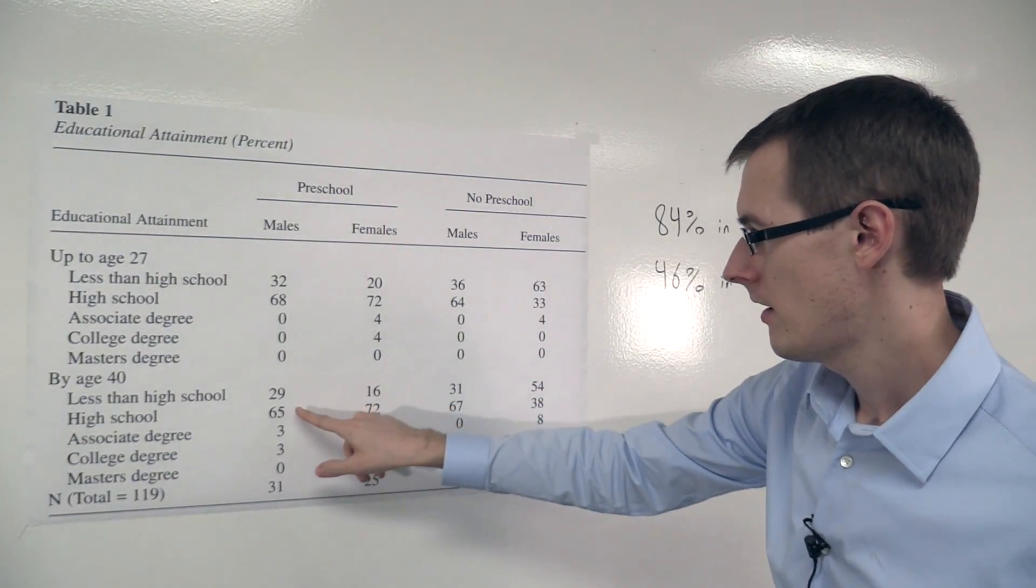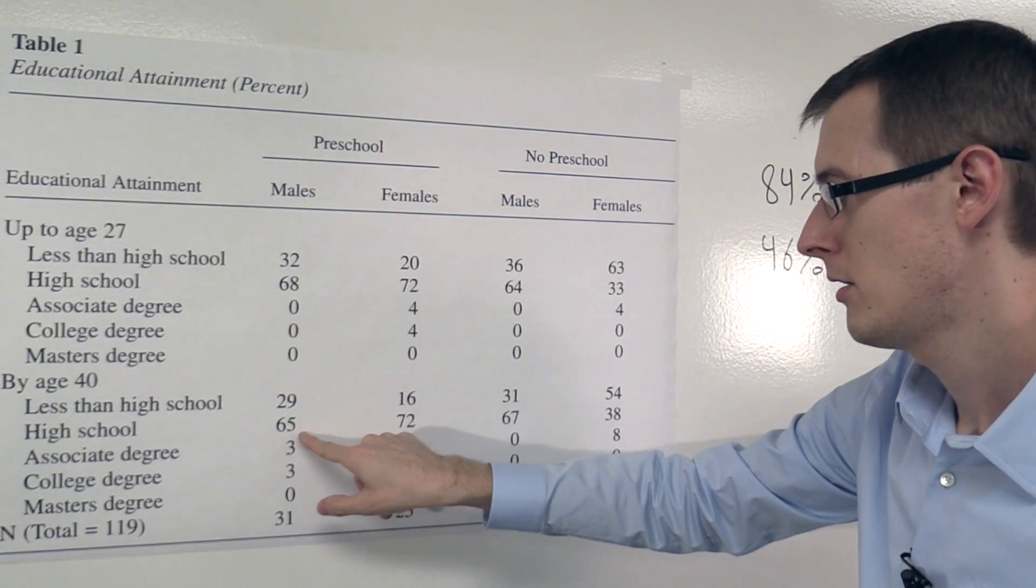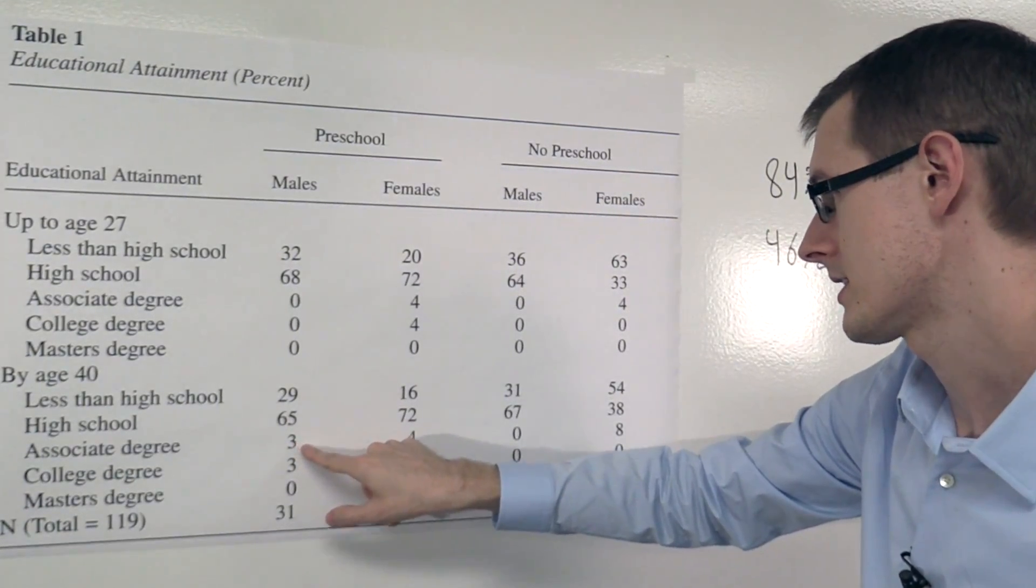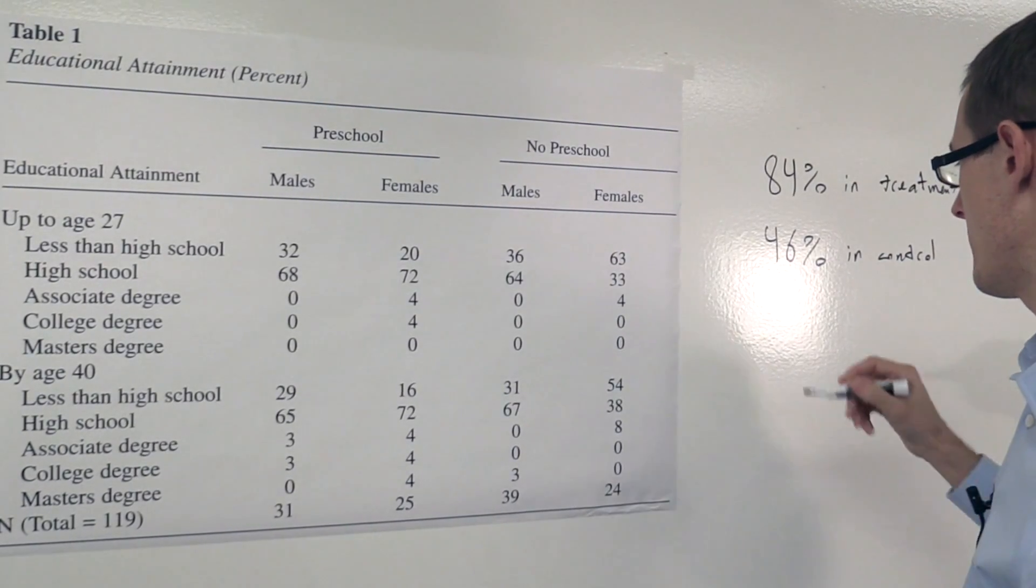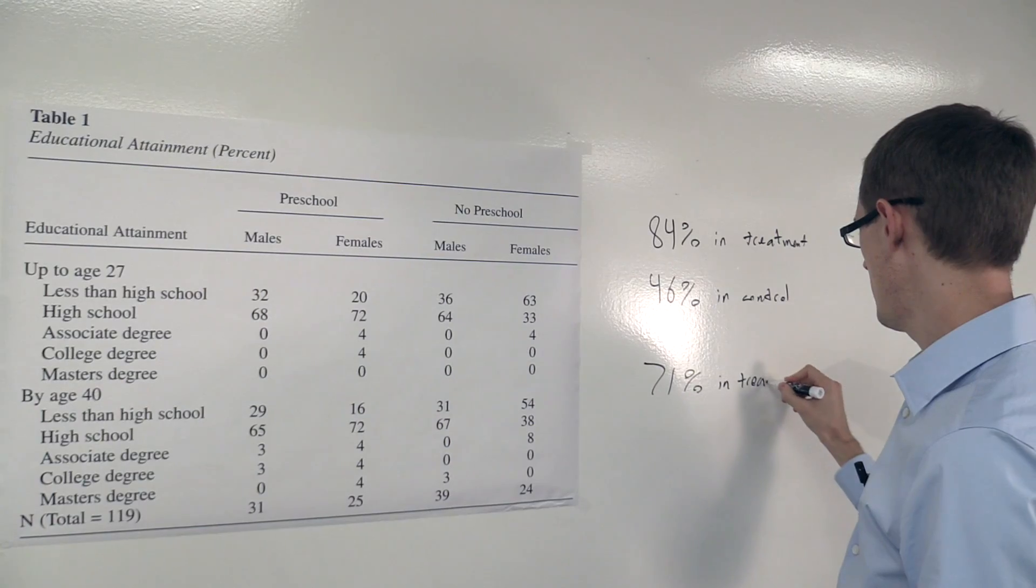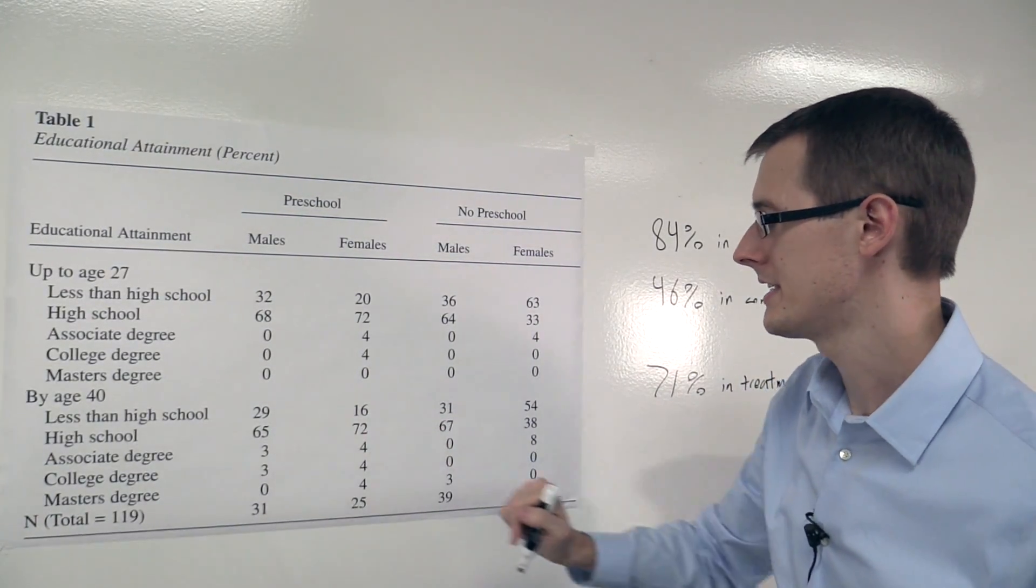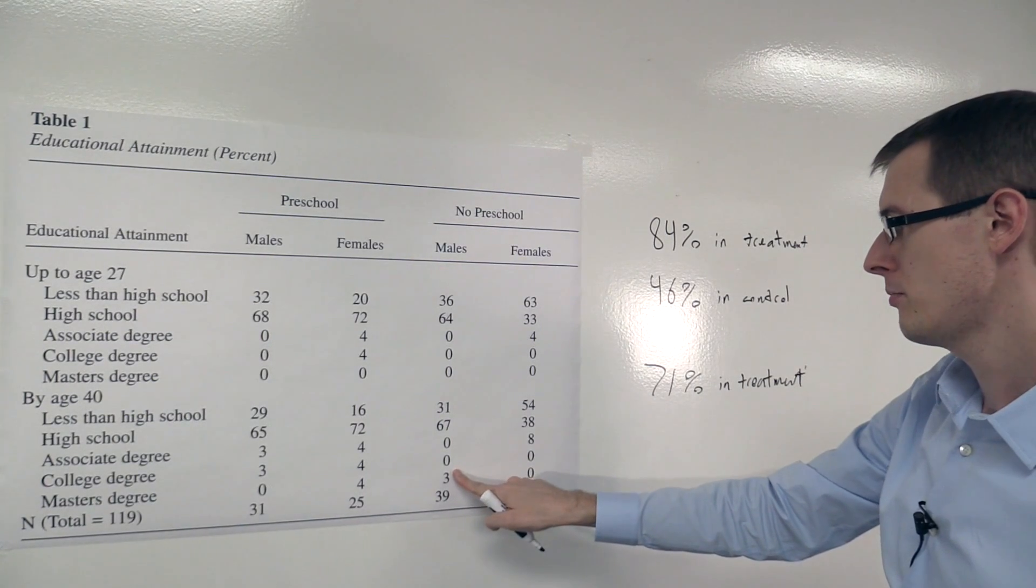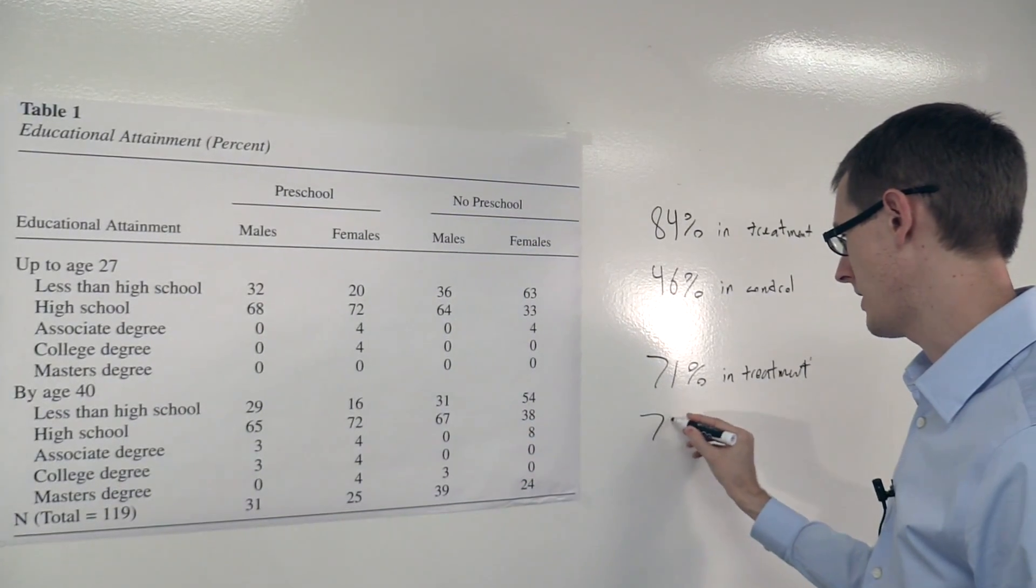So in the treatment group we see that 65% plus 3 is 68, plus 3 is 71, plus 0 is 71. We had 71% of males in the treatment group got at least high school. And in the control group it's 67 plus 0 plus 0 plus 3, which is 70%.